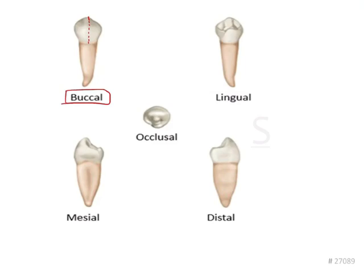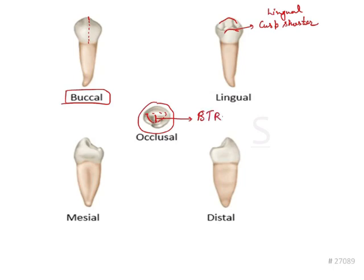From the lingual aspect, you will be able to appreciate that the lingual cusp is much shorter than the buccal cusp. The buccal cusp looks quite larger. At the same time, the occlusal surface shows that the buccal triangular ridge is very prominent. The most prominent buccal triangular ridge or transverse ridge is seen in the mandibular first premolar.